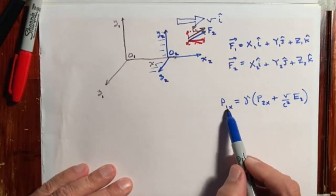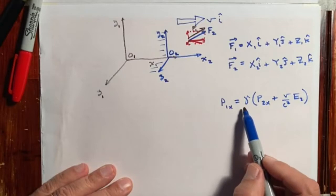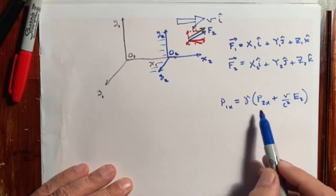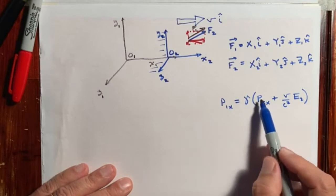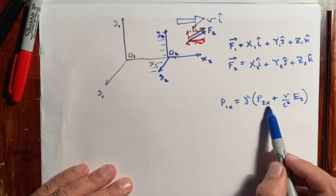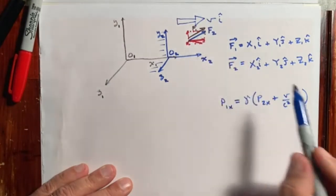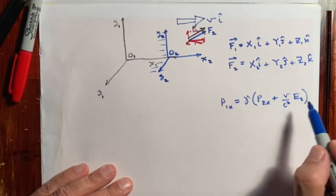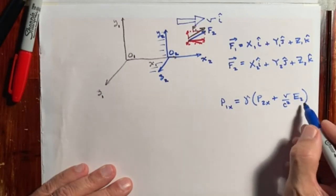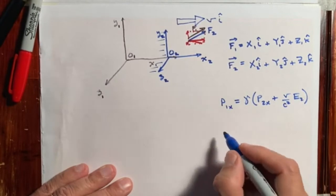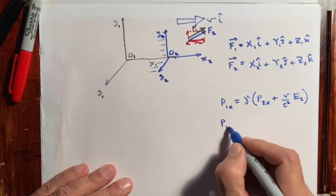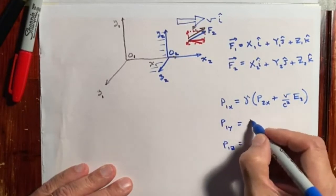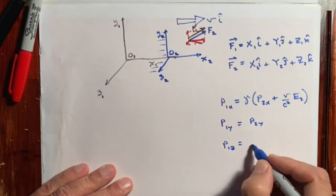The momentum in frame of reference 1 in the X direction equals gamma — remember this is 1 over the square root of 1 minus V over C quantity squared — times the momentum in the second frame in the X direction plus V divided by C times the energy E sub 2 in the second frame of reference. Similarly, p sub 1y equals p sub 2y and p sub 1z equals p sub 2z.